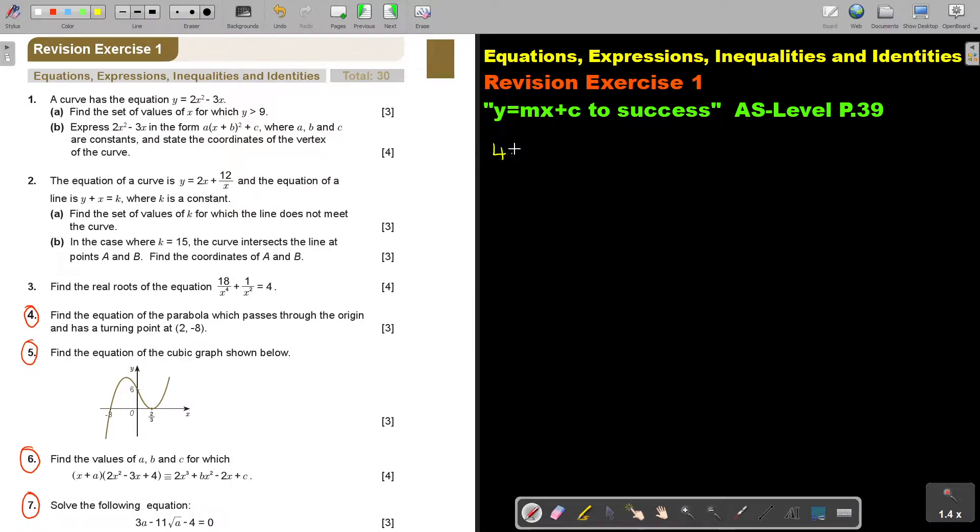Let's start with number 4. Find the equation of the parabola which passes through the origin and has turning point 2 and negative 8. I'm going to use this formula: Y is equal to A times X minus P squared plus Q.